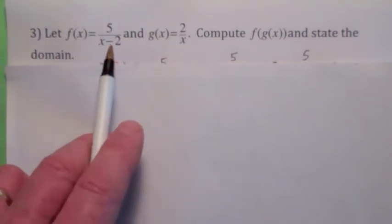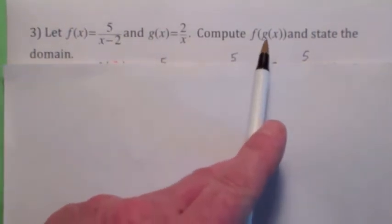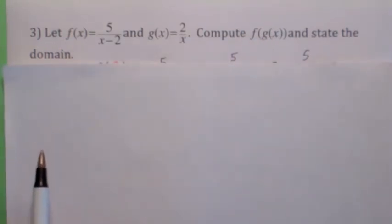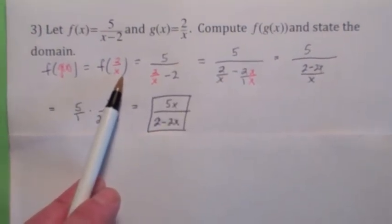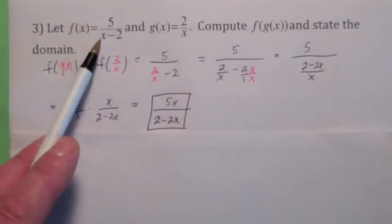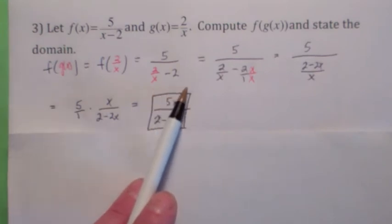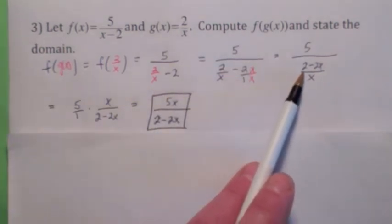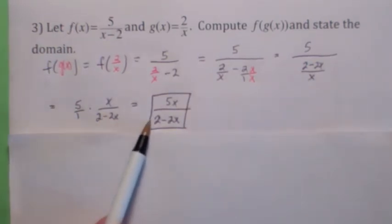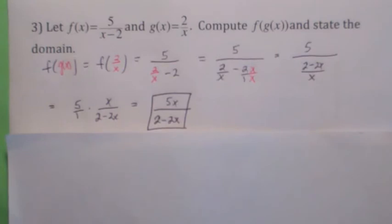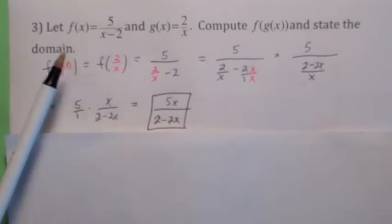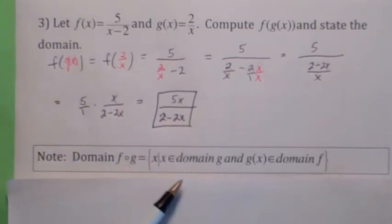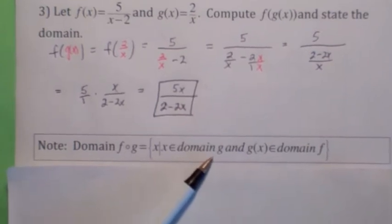Let's compute f of g of x and also determine the domain. f of g of x is going to be f of 2 over x. f takes 5 over whatever you give it minus 2. Simplify by finding the common denominator on the denominator — the denominator becomes 2 minus 2x over x. When you flip and multiply, you get 5x over 2 minus 2x. Now look at this carefully: the domain of the composition has two stages. x must be in the domain of the inside function, so x cannot equal 0.